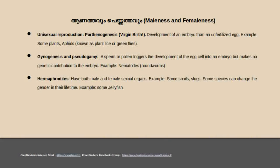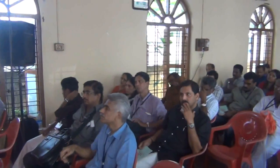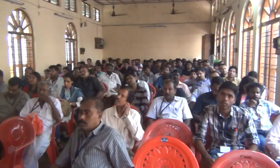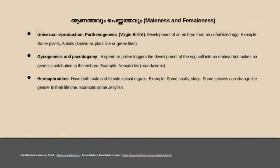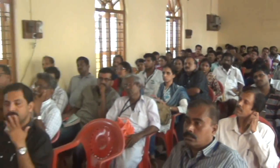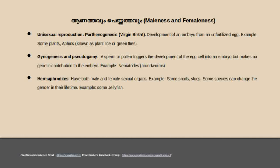Maleness and femaleness: the path of meiosis produces gametes. The gametes are joined and a zygote is formed. We do not yet discuss what the male-female difference is. There is no fundamental difference between male and female, because gametes are just haploid cells.